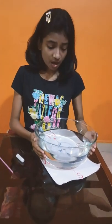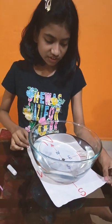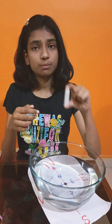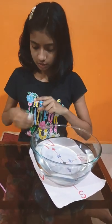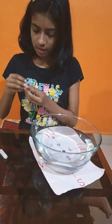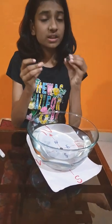For that the materials required are a glass bowl, a paper which shows the north-south-west direction, small plastic bottle or you can take cork, a straw, a needle and a magnet.